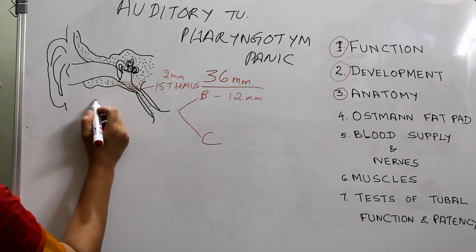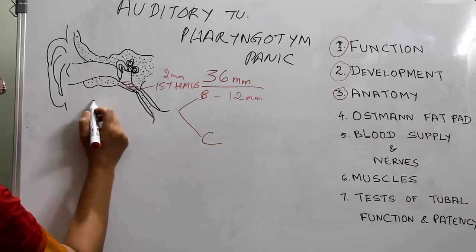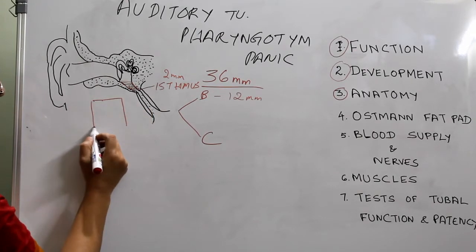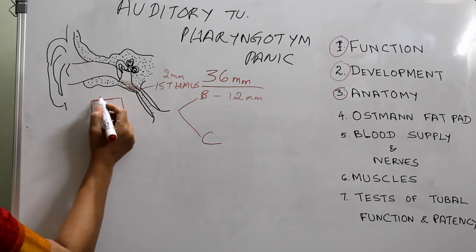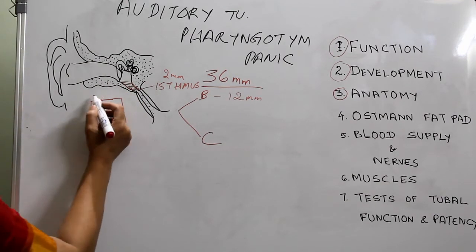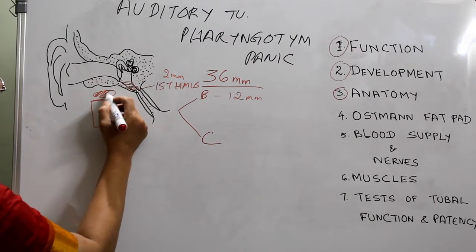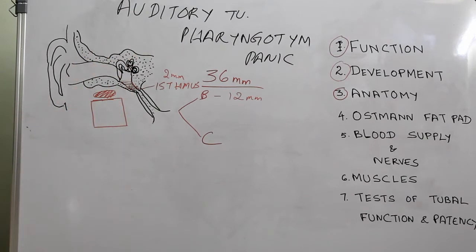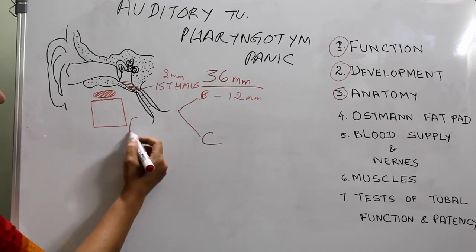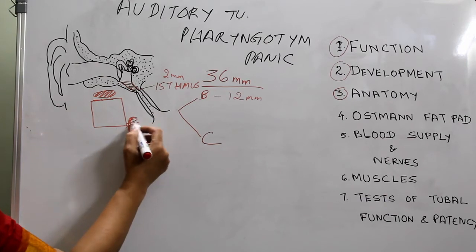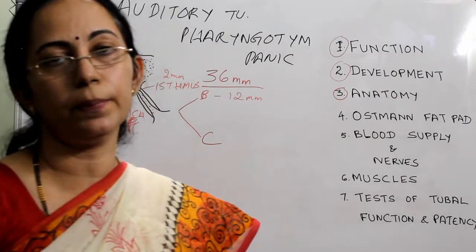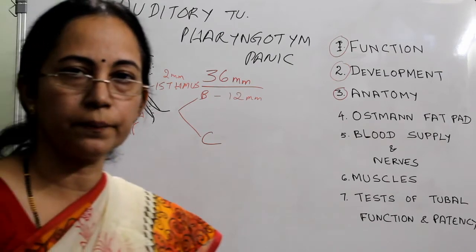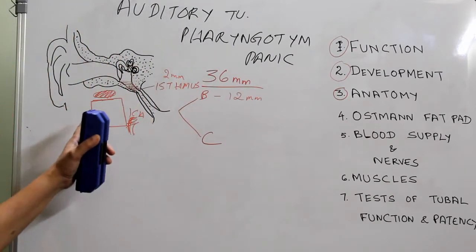In cross-section, the bony part is almost rectangular in shape. Above it lies the tensor tympani muscle, separated from the Eustachian tube by a thin plate of bone. On the medial side, the bony part of the Eustachian tube is also separated from the internal carotid artery by a thin plate of bone.